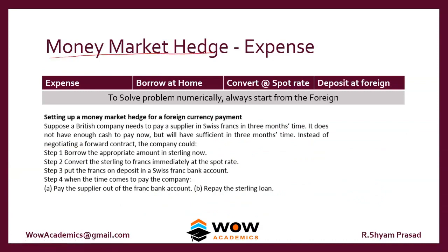We now move to money market hedge for an expense. When you have to pay a foreign expense in 3 months, you borrow in your home currency today, convert at today's spot rate, and deposit in the foreign country. After 3 months, you close the foreign deposit and make the payment, then close the home currency borrowing. The currency is thus locked in at today's spot rate.